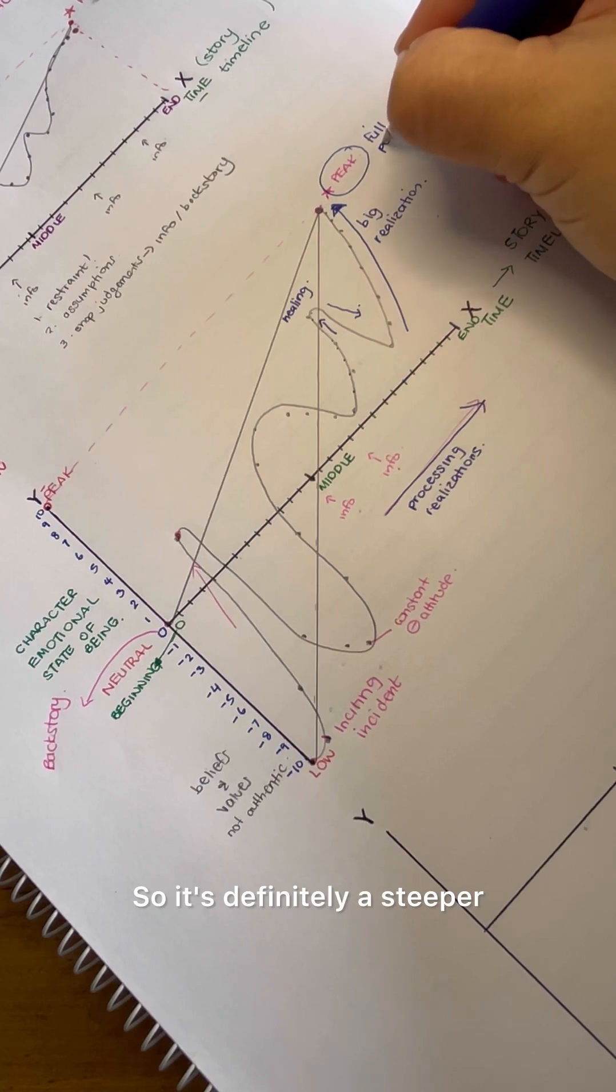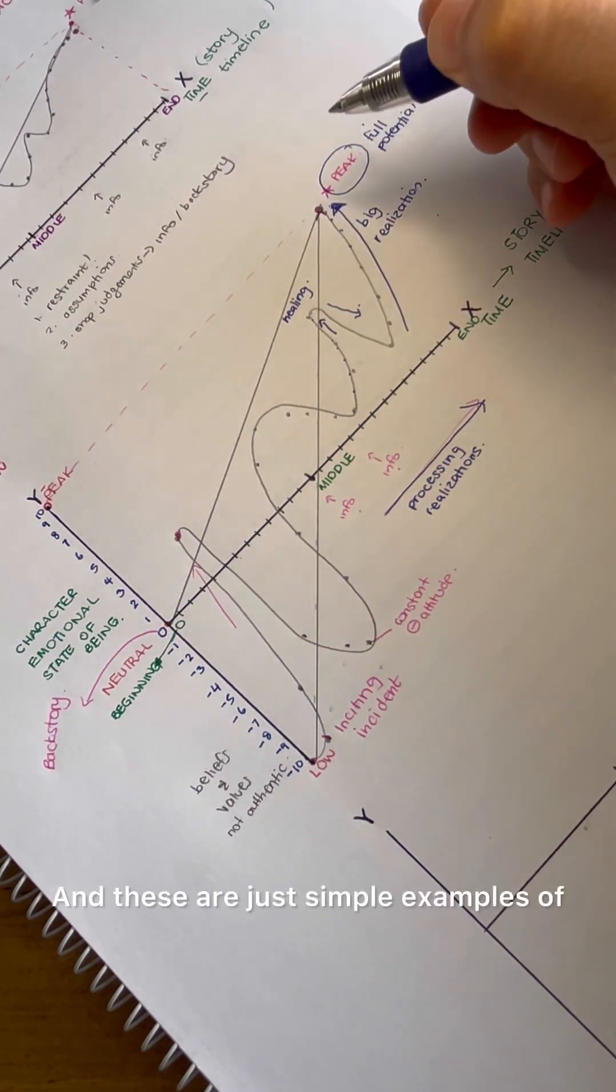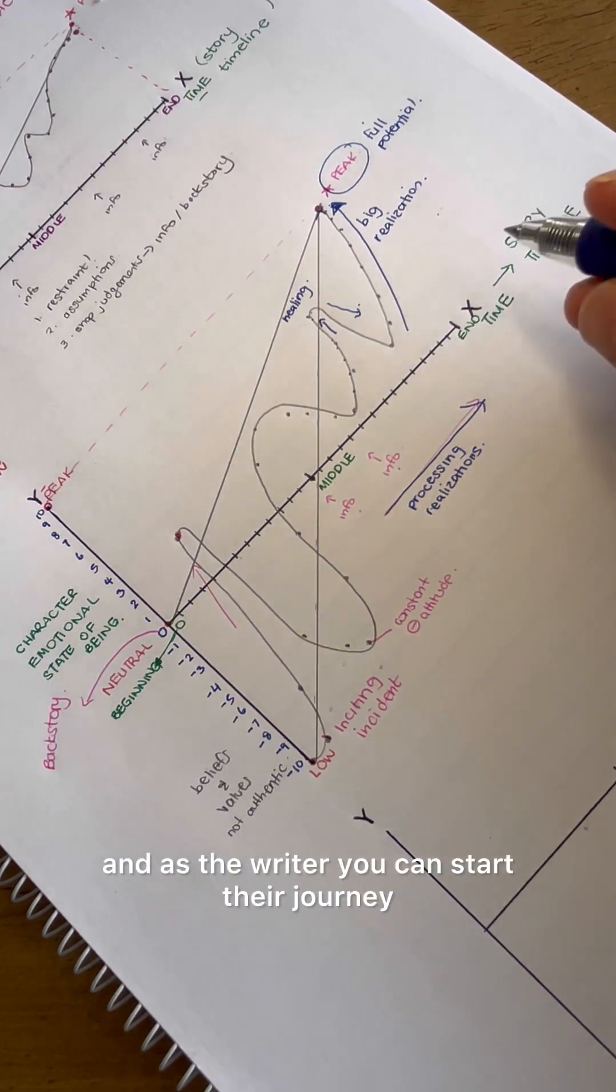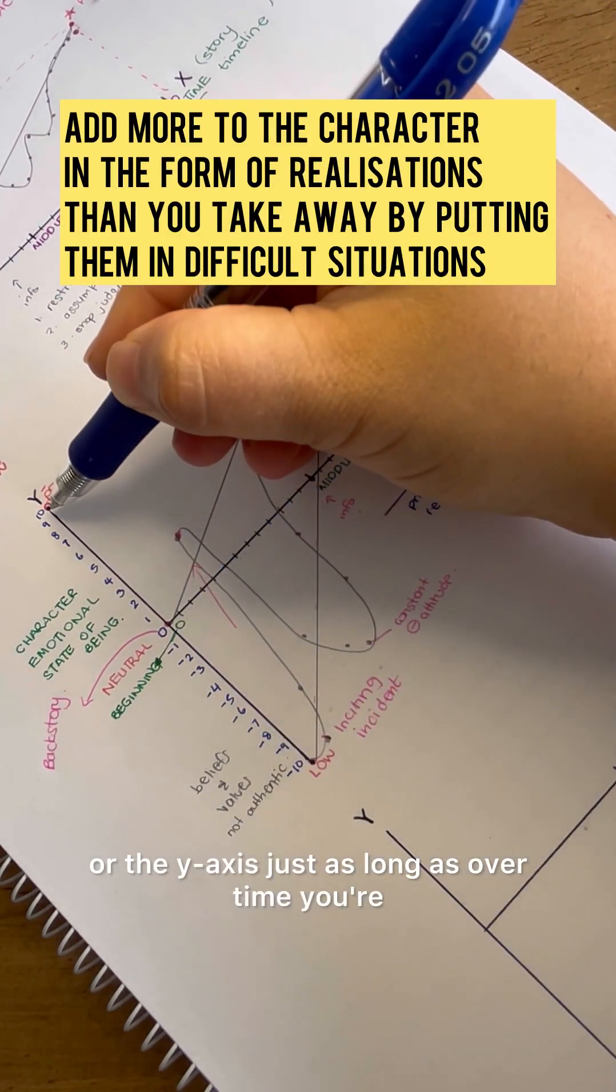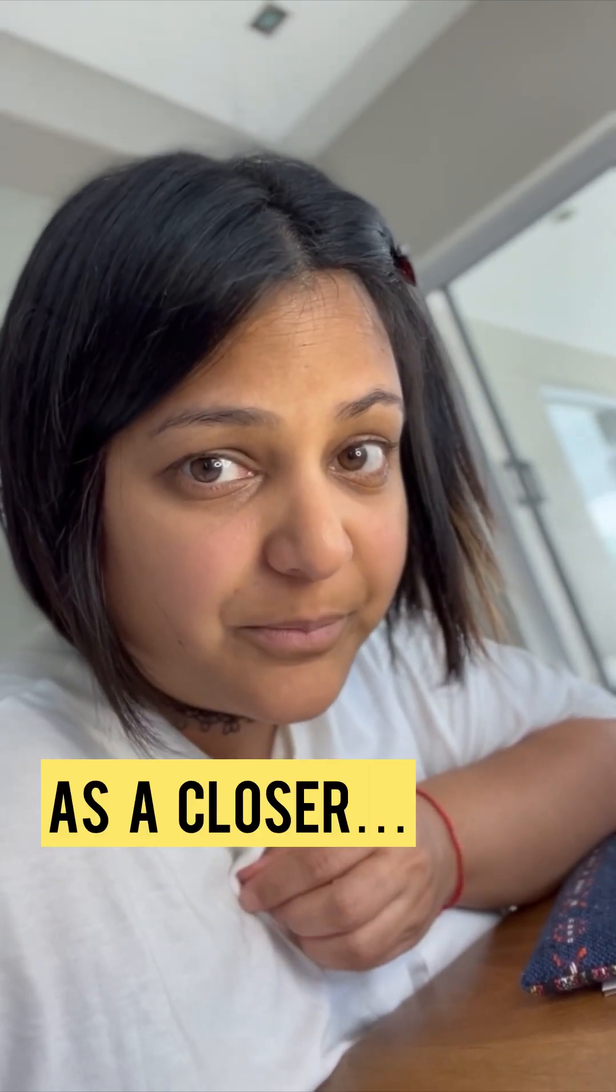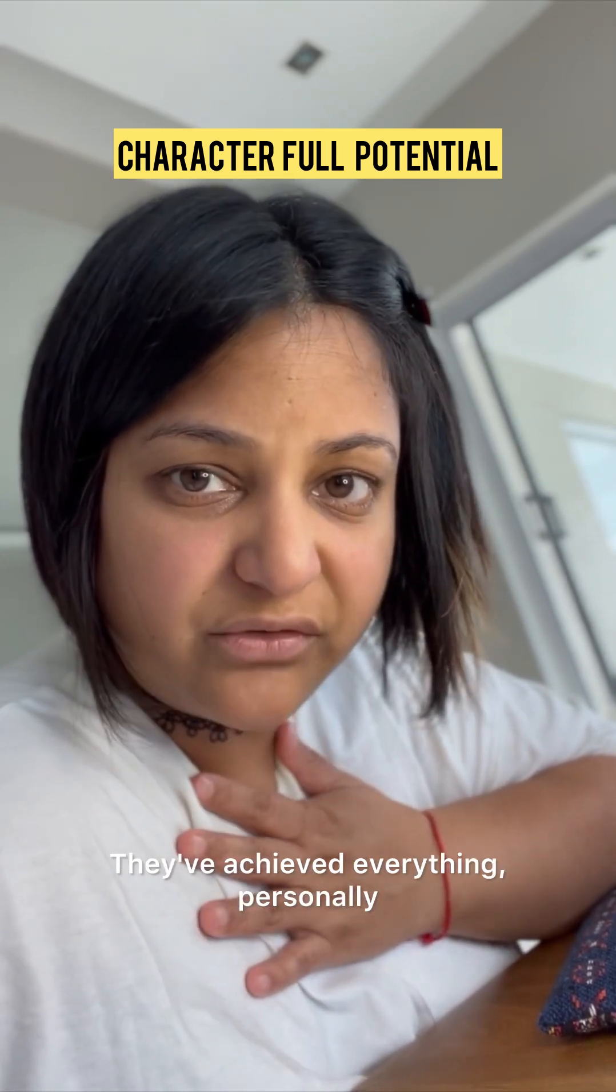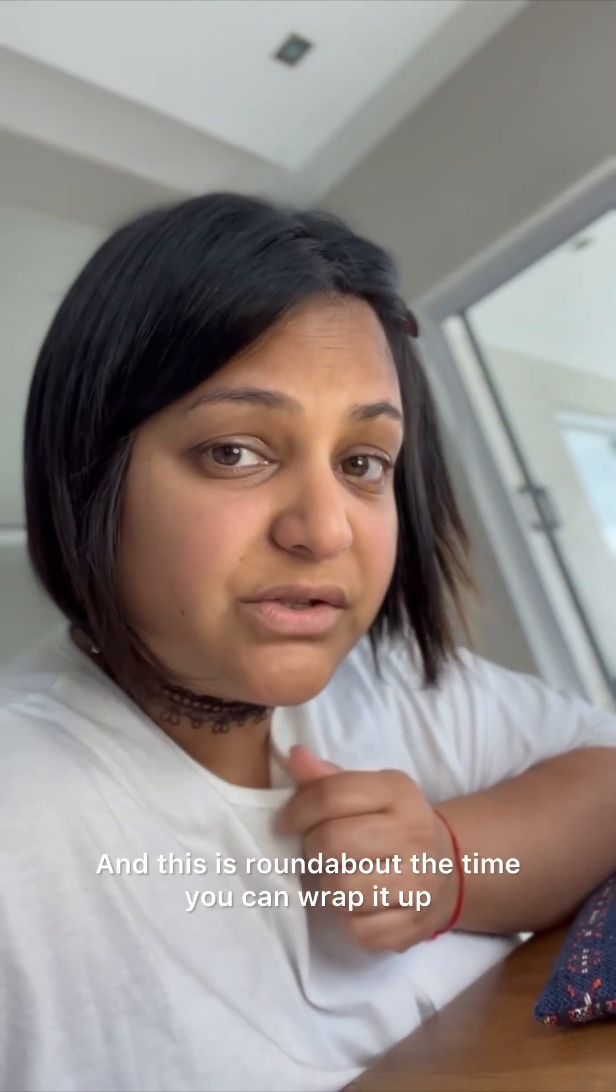So it's definitely a steeper, more tumultuous journey for the main character to self-actualize, but they're capable of it, and they do it. And these are just simple examples of what a positive, linear character arc can look like. And as the writer, you can start their journey from anywhere along the emotional axis or the y-axis, just as long as, over time, you're adding more to their character than you're taking away. And then cheesily and entertainingly, again, maybe they meet a single dad at the school drop-off, the heir to something really important and who is ridiculously wealthy. You can see where this is going. So by the end of the story, the main character doesn't just have everything. They've achieved everything personally. They've realized what's important in life, what makes them happy, that sort of thing. And this is around about the time you can wrap it up.